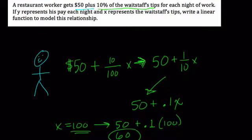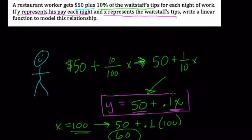So here, as an equation, y represents the pay from each night. So y is going to be equal to what? Well, if x represents the waitstaff's tips, it's $50 plus 0.1 times x. And that's it.